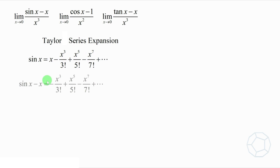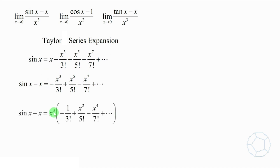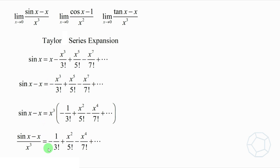Subtract x to the other side. We get this. Notice that there's a common factor of x cubed on the right-hand side — let's take it out. Dividing x cubed to the left-hand side, we have sine x minus x over x cubed is equal to negative 1 over 3 factorial plus x squared over 5 factorial minus x to the power 4 over 7 factorial plus higher powers of x.